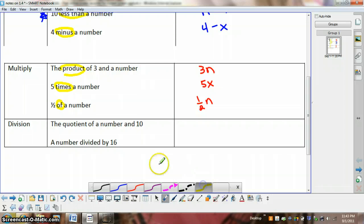And last but not least, let's take a look at division. We have quotient and divided by. So let's take a look at those. The quotient of a number and 10 means we'd have a number divided by 10. And then a number divided by 16, we'd just have x divided by 16. Or you could actually use the division symbol if you wanted to as well.